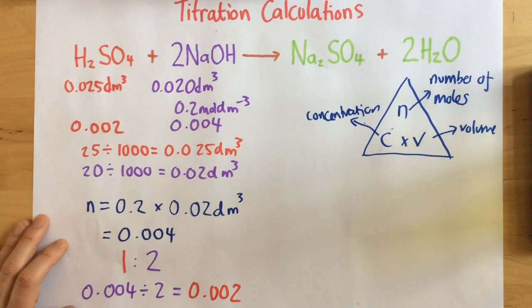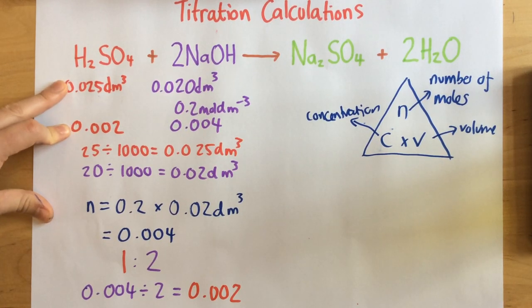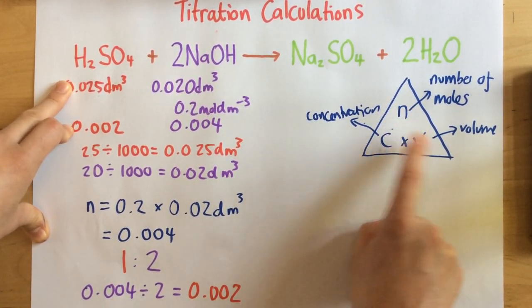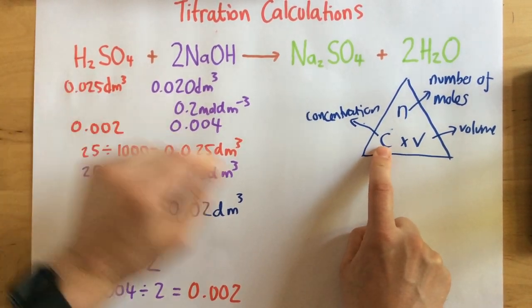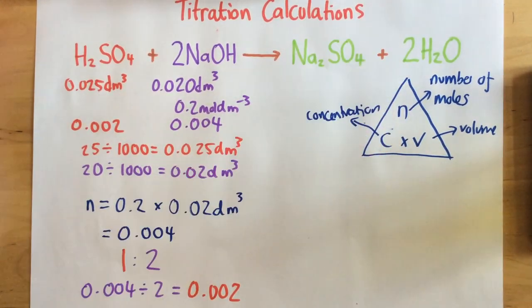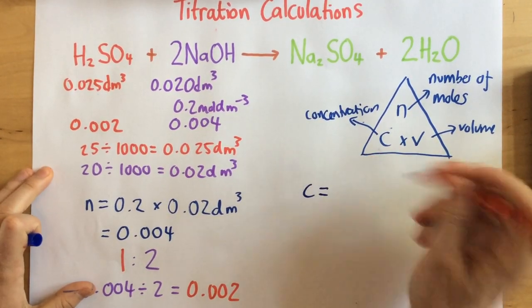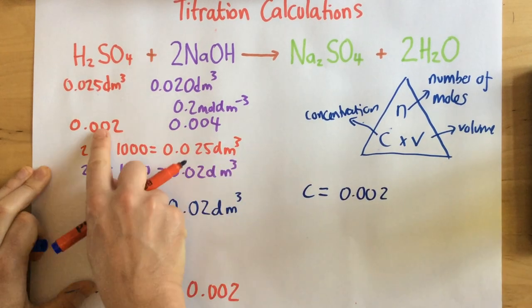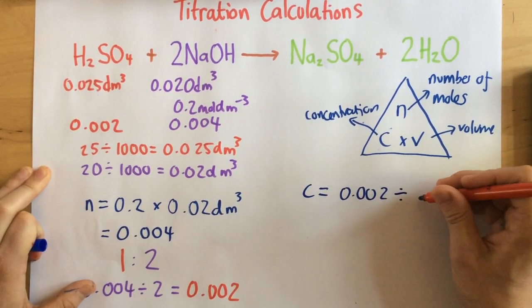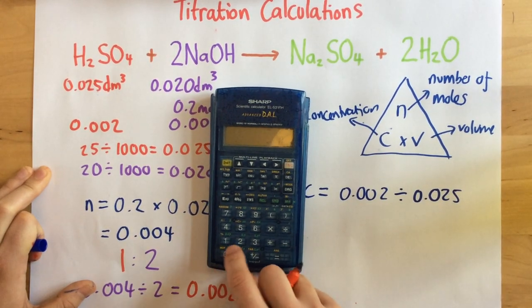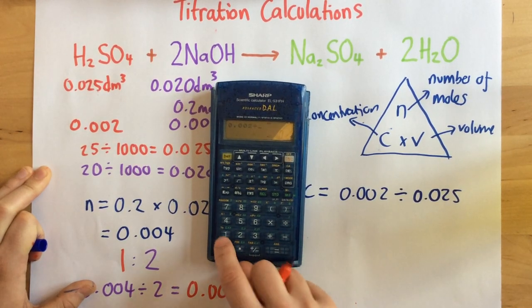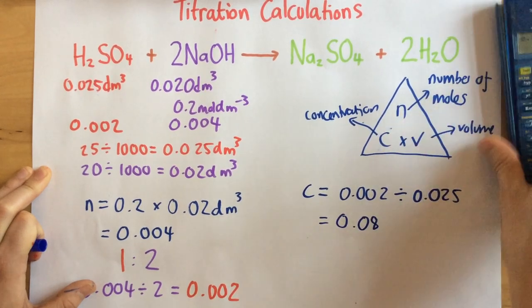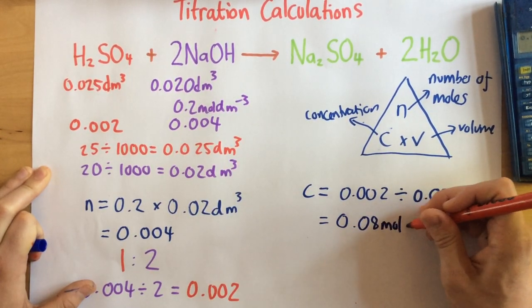Now I've got both the volume and the number of moles of sulfuric acid, so I can use the equation triangle to find the concentration. I cover up C, so concentration = N ÷ V. My number of moles is 0.002 (found from the molar ratio) and my volume is 0.025 dm³. So 0.002 ÷ 0.025 = 0.08 mol/dm³. That is the concentration of the acid.